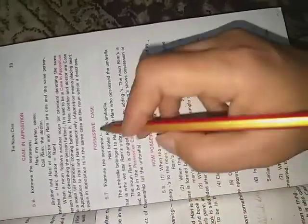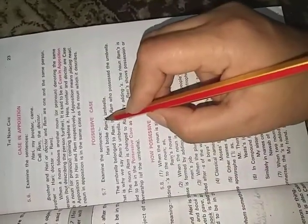Another one is possessive case. How does it happen? When we put the apostrophe and S. When we say Ram's, Hari's, Anju's, Sahil's. So when we put that apostrophe and then S showing the position, that is your possessive noun.